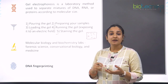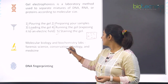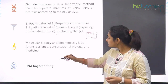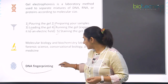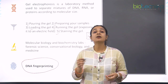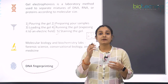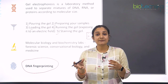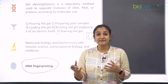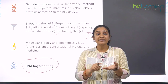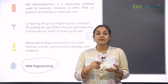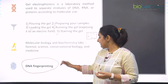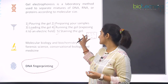Forensic science also uses gel electrophoresis a lot, as does conservation biology and the medical field. DNA fingerprinting is one such technique used to confirm biological parentage or at crime scenes — to determine whether a person could have committed a crime. The first step of DNA fingerprinting is gel electrophoresis.